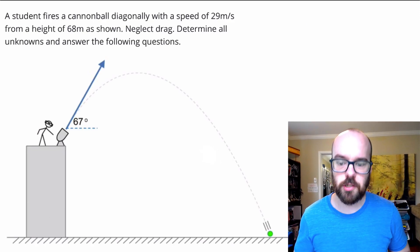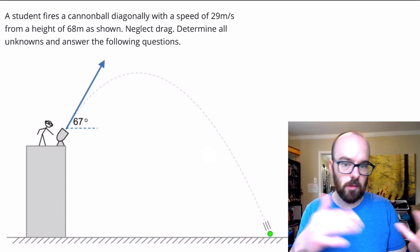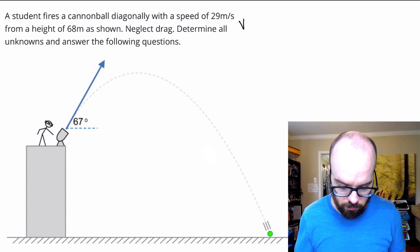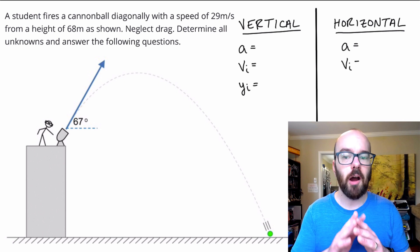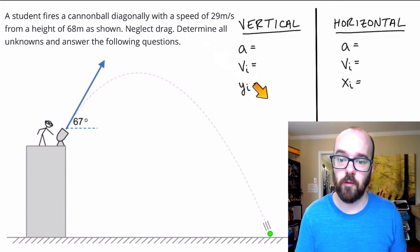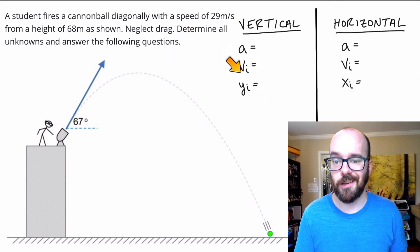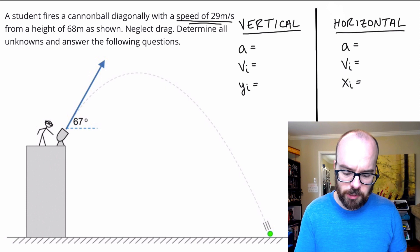So let's get started. I'm going to take those questions off to have a little more room to work, and we'll solve for all the things we can, then go back and answer those questions. Anytime we do a projectile motion problem, I always start by splitting the problem into vertical component and horizontal component. Even before reading all of the problem, I'm going to list out the variables I'll need: acceleration, initial velocity, and initial position for both the vertical and the horizontal.